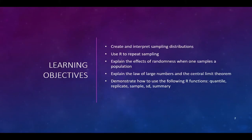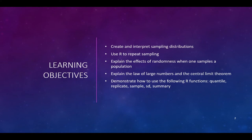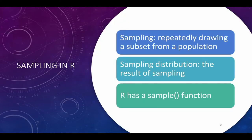The first part of today's lecture: we're going to investigate how to create and interpret sampling distributions, how to use R to repeat sampling, discuss the effects of randomness when one samples a population, and the law of large numbers and the central limit theorem. When we talk about that, it's going to be short and sweet — this is what it is; we're not getting really into theory. Finally, we're going to use some additional R functions: quantile, replicate, sample, and summary.